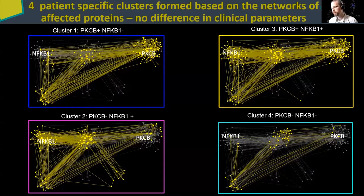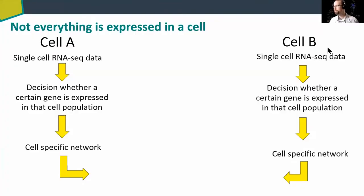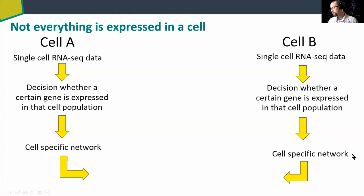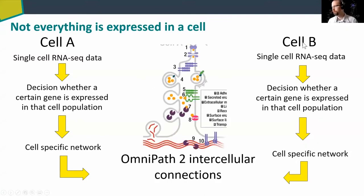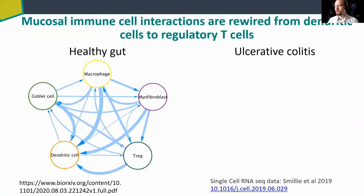Now we move to the intercellular datasets, still using ulcerative colitis but with the newest version of Omnipath. We use single-cell RNA-seq data here. We have two cell types, and we need to know which genes are expressed in each particular cell. The RNA-seq data serves as a proxy for gene expression, and then we make cell-specific networks for cell A and cell B, and use the Omnipath database to connect these two cells.